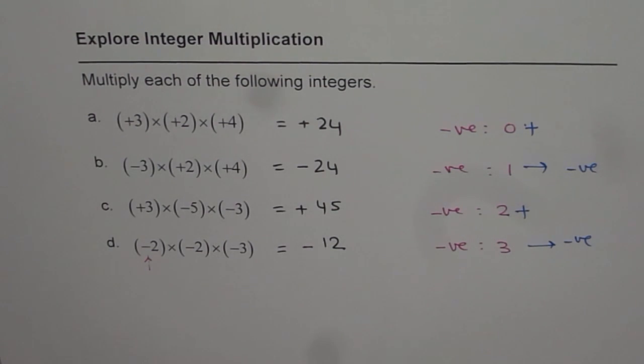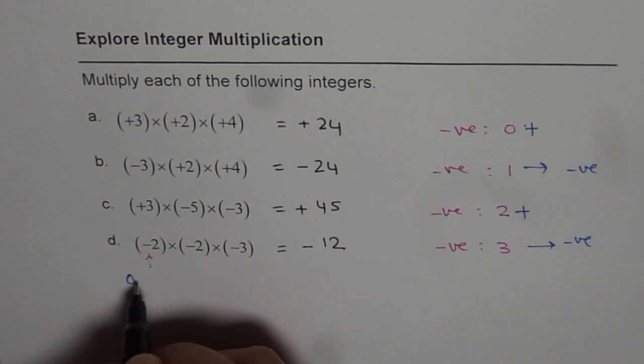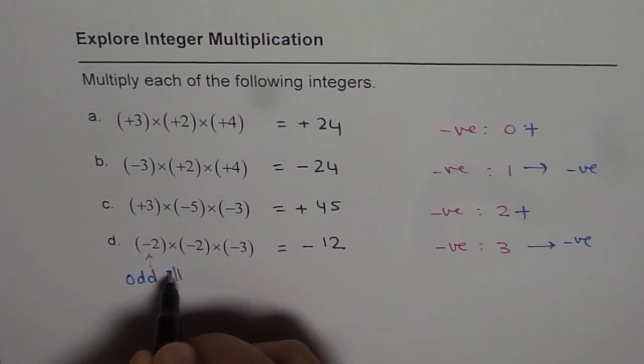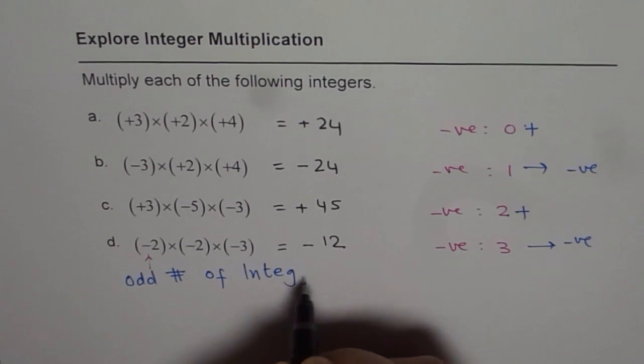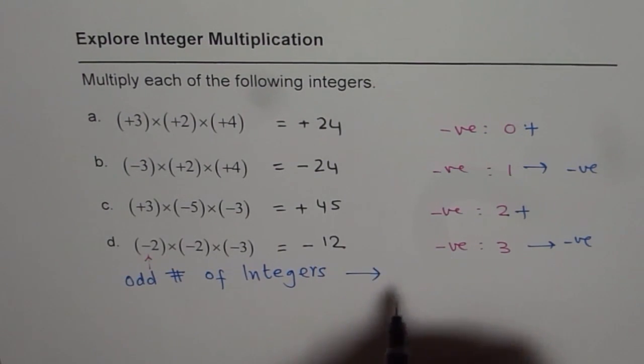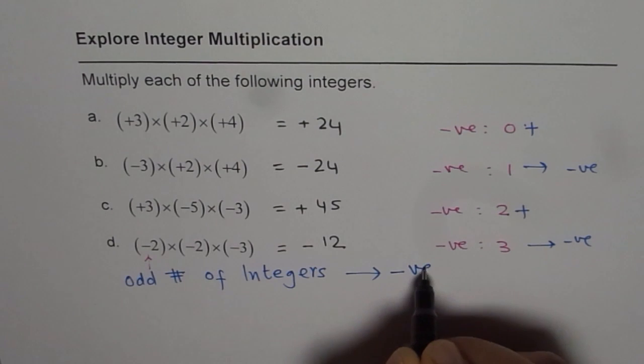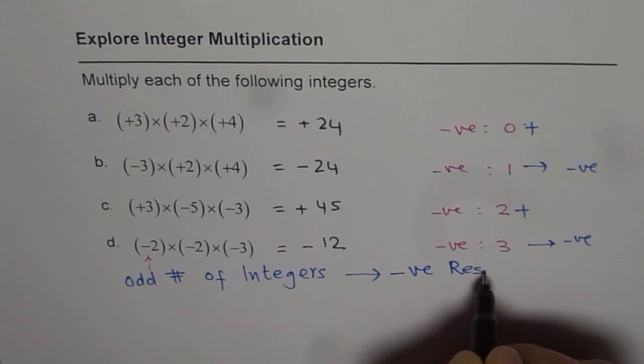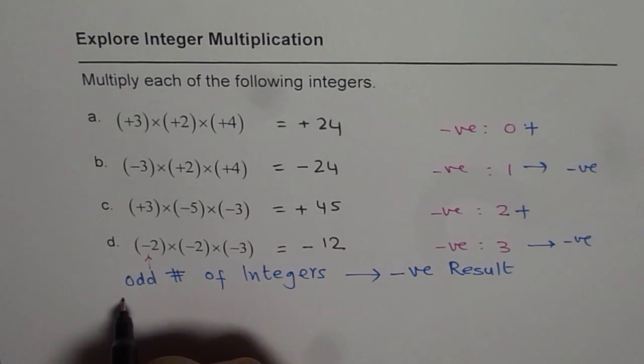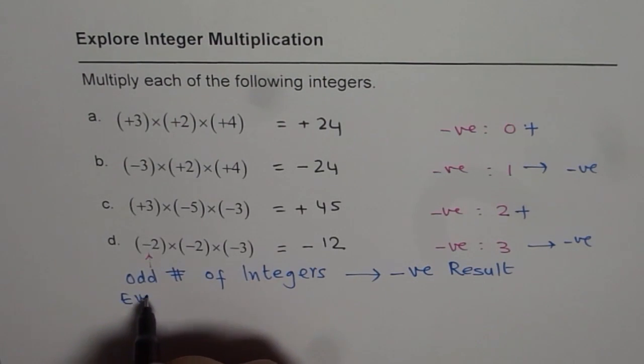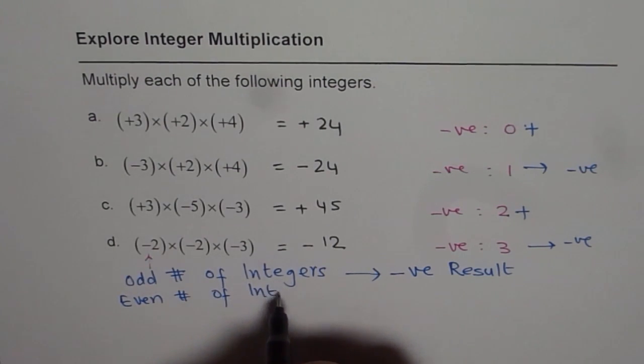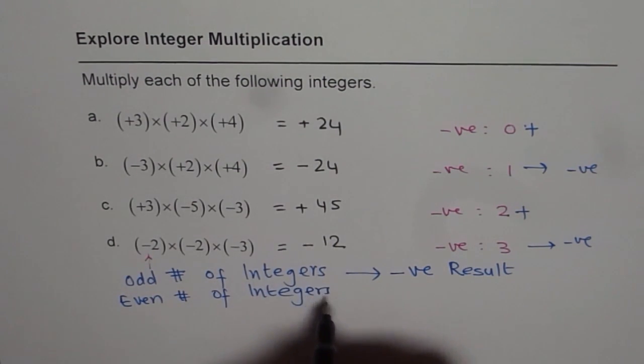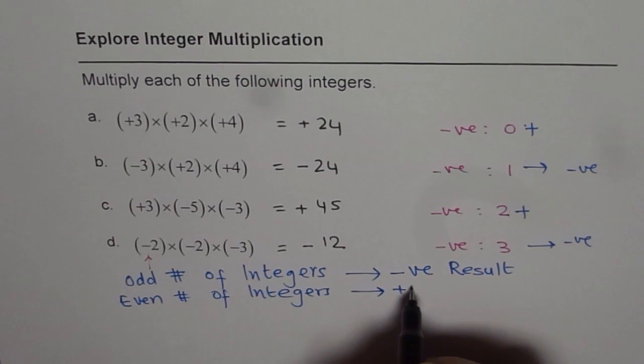So therefore, we can conclude that if we multiply odd number of integers, then what is the result? You get negative result.